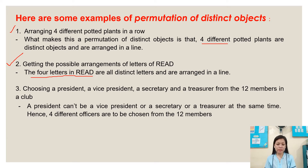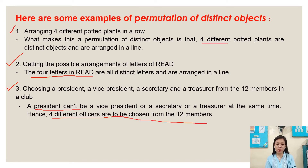Number three: choosing a president, a vice president, a secretary, and a treasurer from the 12 members in a club. A president cannot be a vice president, secretary, or treasurer at the same time. Hence, four different officers are to be chosen from the 12 members.